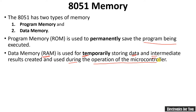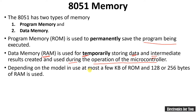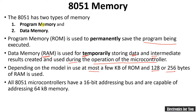Data memory is generally used for temporary storing of data. Depending on the model, most 8051 microcontrollers have a few KB of ROM and 128 or 256 bytes of RAM. All 8051 microcontrollers have a 16-bit addressing bus, so 2 raised to power 16 equals 64 KB — that is the maximum memory that can be accessed. We can connect external memory up to 64 KB, which may be RAM or ROM.